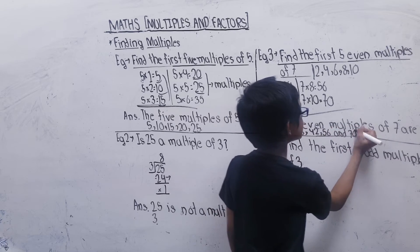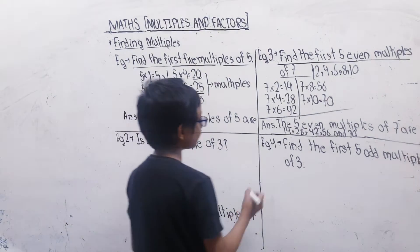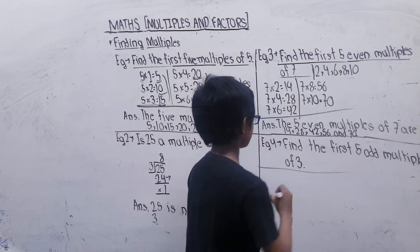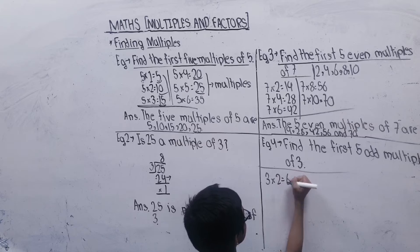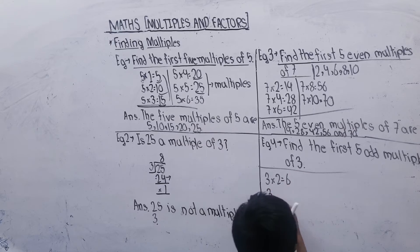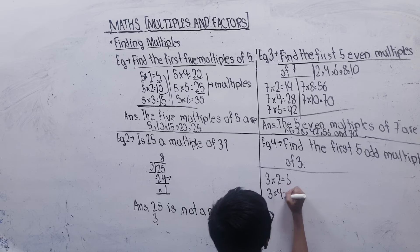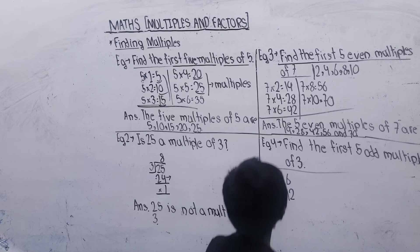Let's see another example: Find the first five odd multiples of 3. So 3×1 is 3, 3×2 is 6, 3×3 is 9, and 3×4 is 12.